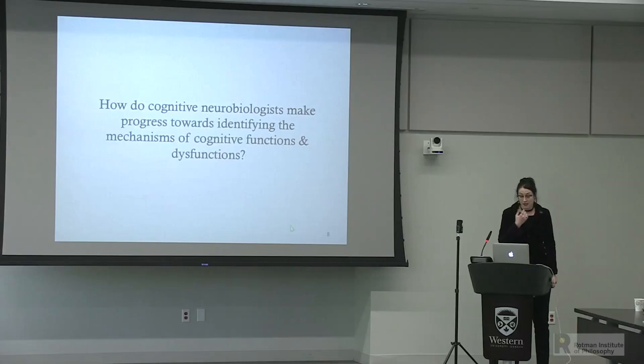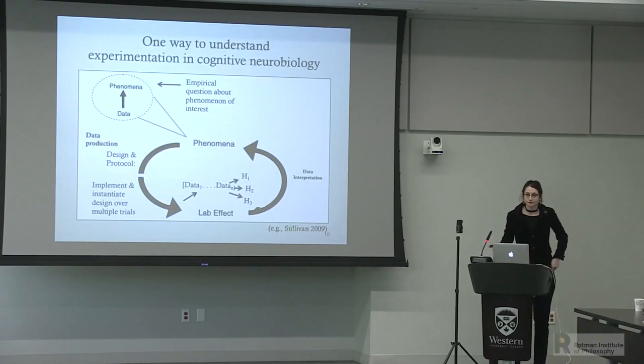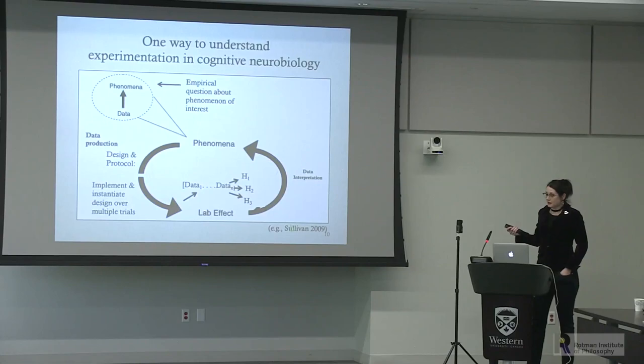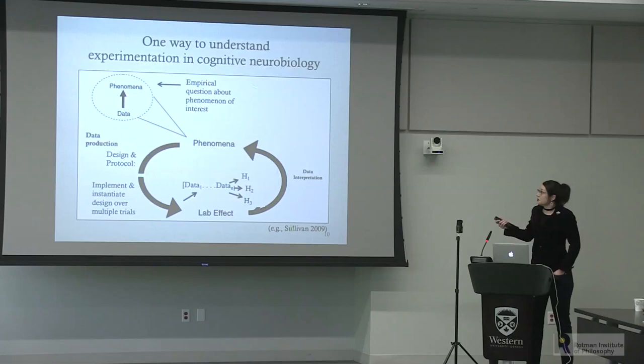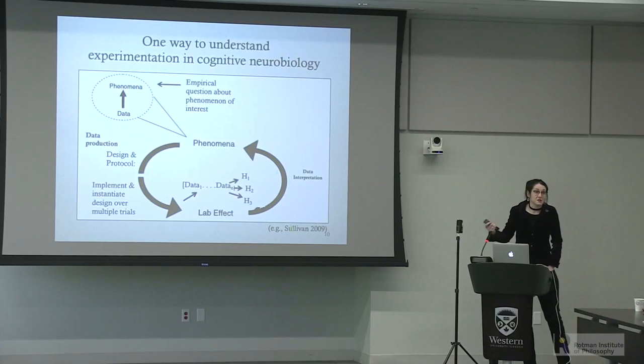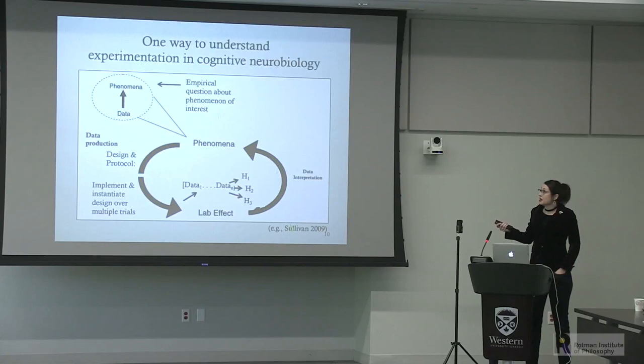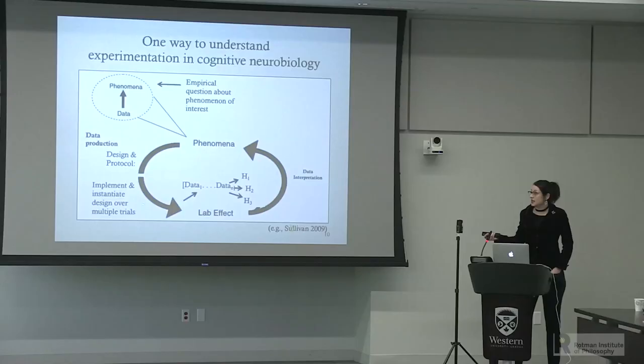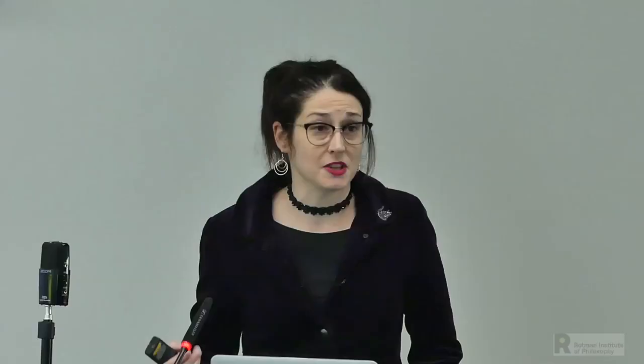How do cognitive neurobiologists make progress towards identifying the mechanisms of cognitive functions? One way to think about experimentation in neuroscience is as an experimental process. It begins with an empirical question about a phenomenon of interest. The investigator designs an experiment with a protocol, selects an experimental paradigm to produce a specific form of learning and memory, and then implements that design over multiple trials, adhering closely to the protocol.